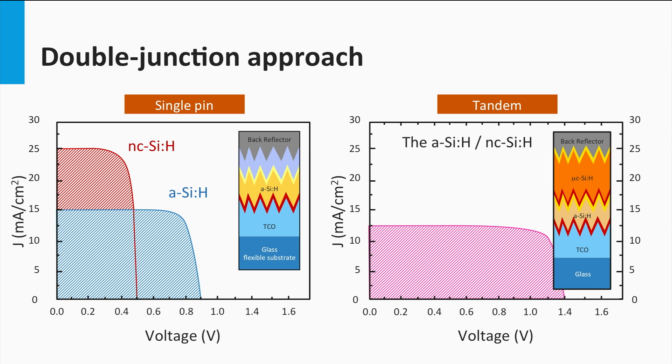Given the examples of the single junction here, the best current matching of both cells would deliver 12.5 mA per square centimeter.